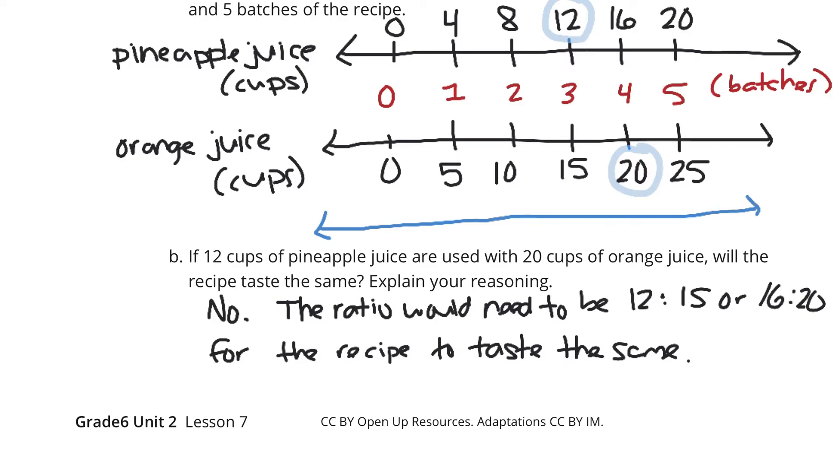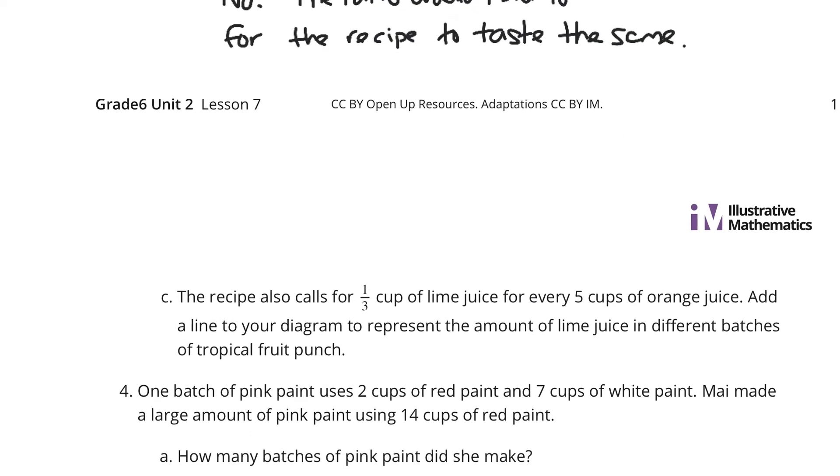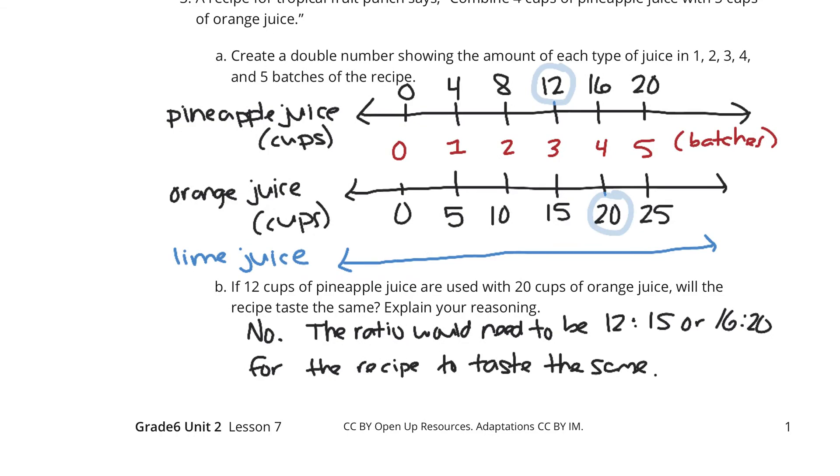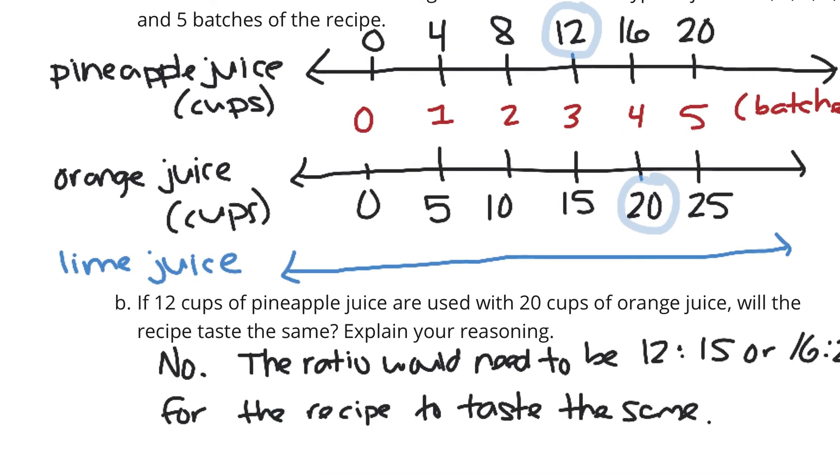And this is lime juice. Going back to it here, it was in cups, and it was one-third for 5 orange. So one-third for 5 orange juice. In cups, we have zero, one-third for every 5 orange juice. And so drawing in these numbers here, one-third, two-thirds, three-thirds is one, and then we have one and a third and one and two-thirds.